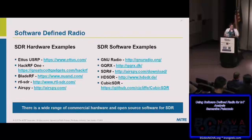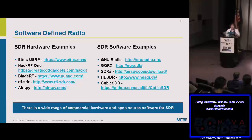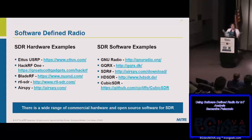IoT devices generally use ISM or unlicensed bands. So 915 megahertz is pretty popular, as is around 430 megahertz, 2.4 gigahertz — which is the Wi-Fi and Bluetooth band — and 5 gigahertz, the newer unlicensed band. Those are generally the ranges you'll see.